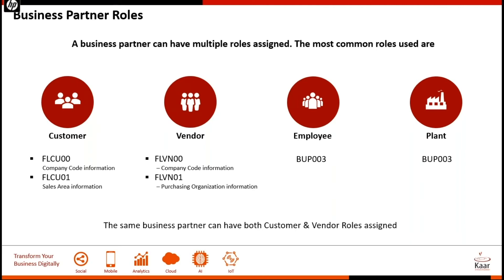For creating these objects, we need a different transaction code, which is BP. Whereas we were using XD, FD, or VD for customers, and for vendors we had XK, FK, and MK01. Those are not required as of now for S4, because even if users try to enter those transactions in S4, the system is smart enough to transform them to BP transactions — it will directly take you to the BP transaction.